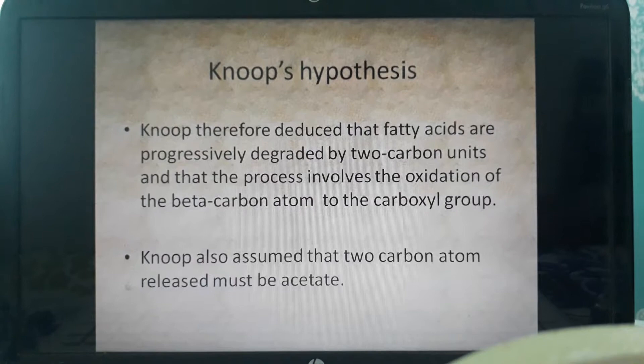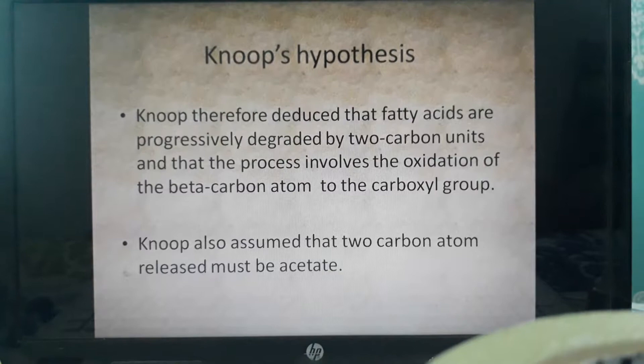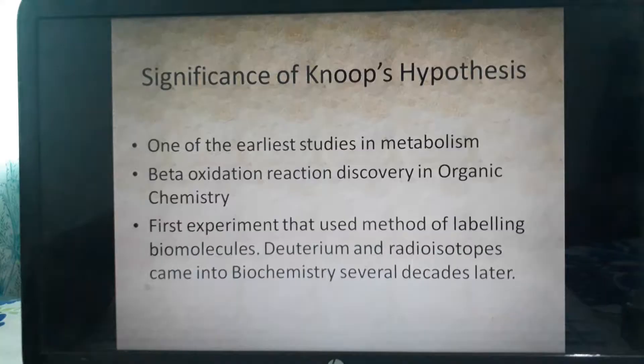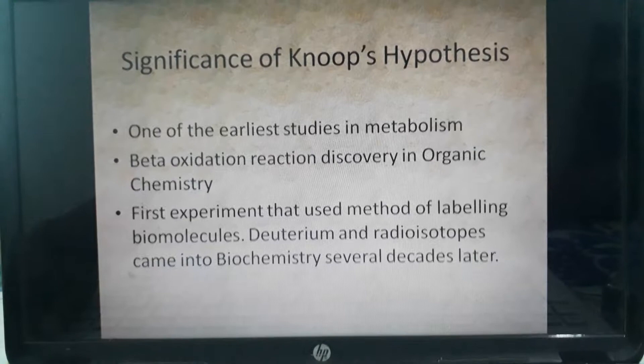Knoop therefore deduced that fatty acids are progressively degraded by two-carbon units, and that the process involves the oxidation of the beta carbon to a carboxylic group. Knoop also assumed that the two-carbon unit released must be acetate, but actually the two-carbon released is not acetate — it is acetyl-CoA.